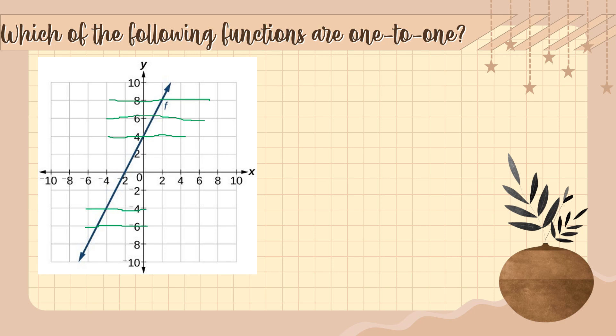Every horizontal line drawn intersects the graph only once. Since every horizontal line hits our graph — the blue line — exactly once, this third picture is an example of a one-to-one function.